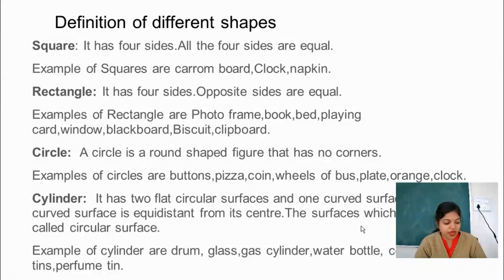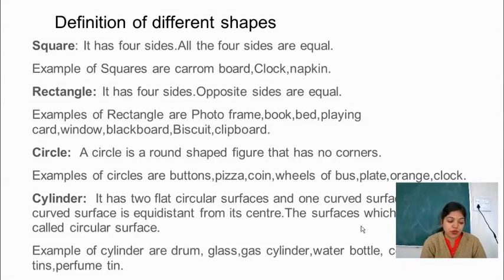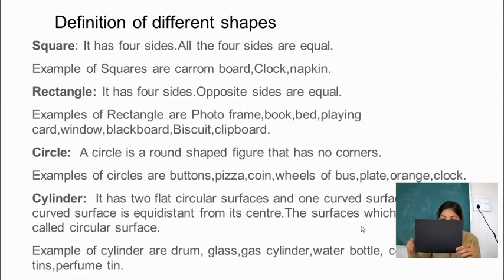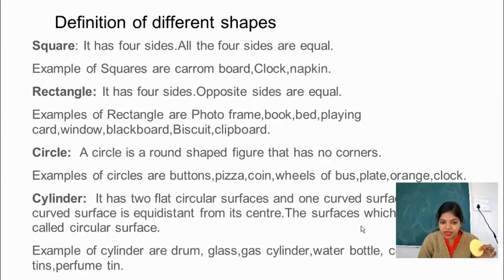So the next one we have is circle. A circle is a round shaped figure and it has no corners. I showed you the rectangle — it has 4 sides and 4 corners. But a circle is a round shaped figure and it has no corner.